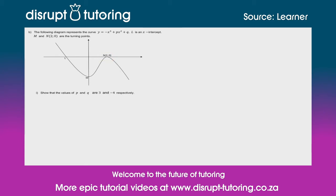So what I'm going to do is I'm going to find the derivative of, I'm going to call this graph f of x. So let's call this graph f of x. And it equals minus x cubed, plus px squared, plus q.